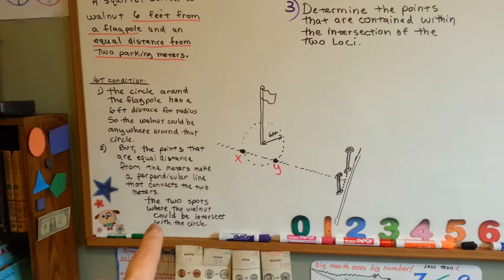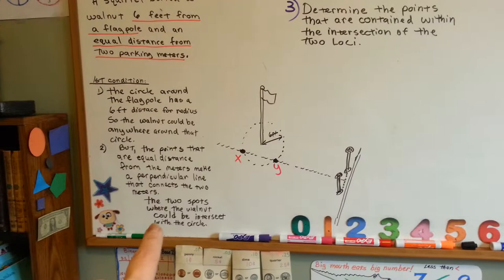That's going to fulfill the second one. That means the two spots where the walnut could be is where it intersects the perpendicular line with the circle. Isn't that neat?